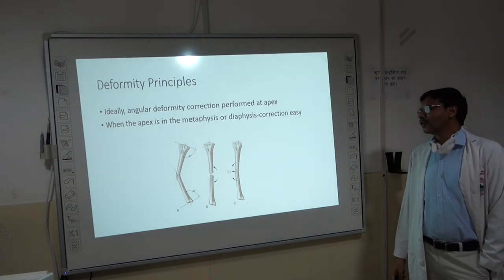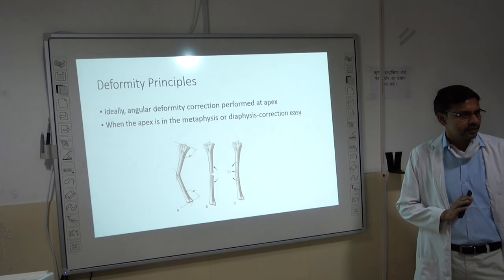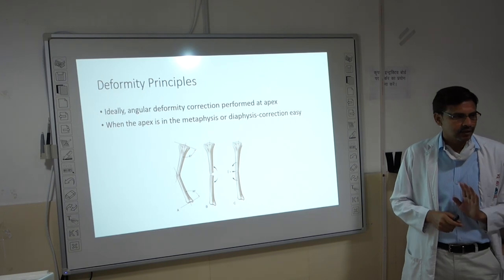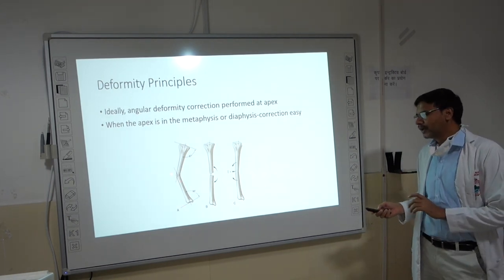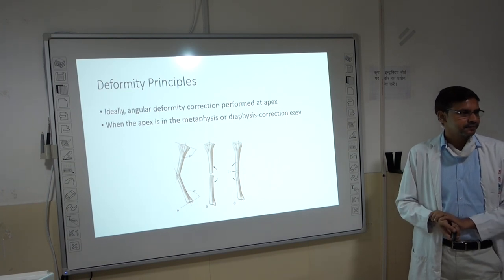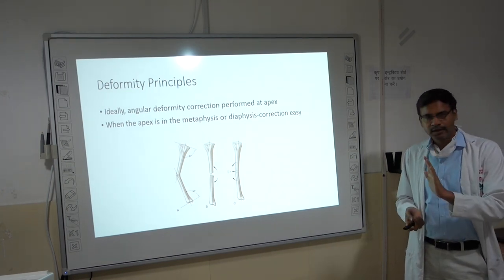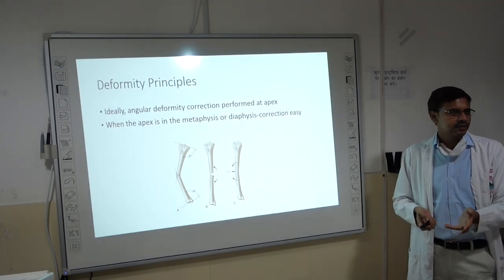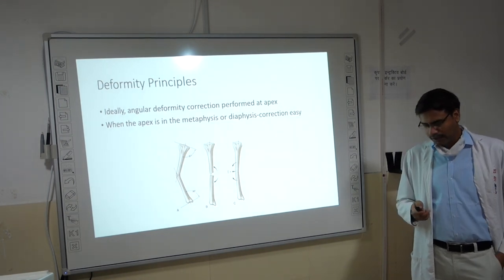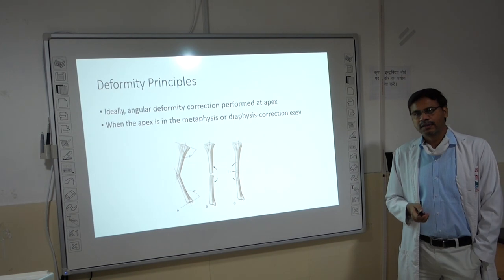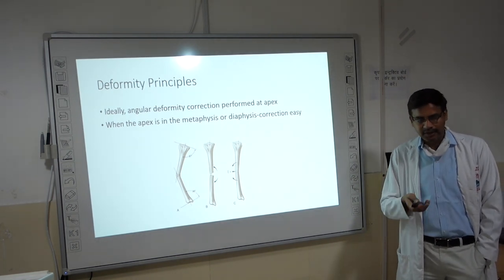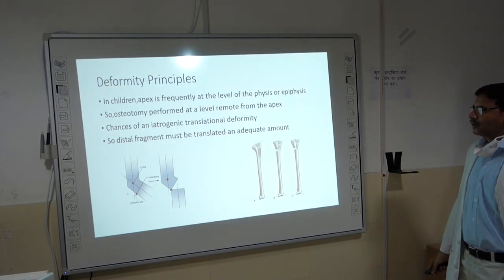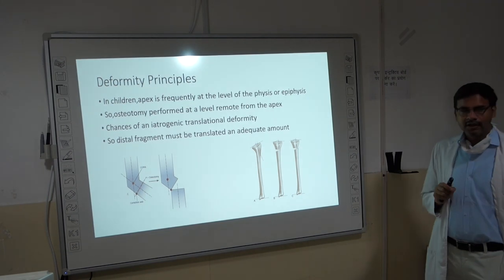Ideally, angular deformity correction should be performed at the apex of the deformity — meaning your CORA, your ACA, and your osteotomy should all be at the same level. This is straightforward if the deformity is in the diaphysis of the bone. However, the problem with deformities nearer to the joint or the physis is that the CORA is at a point where you cannot do the osteotomy.